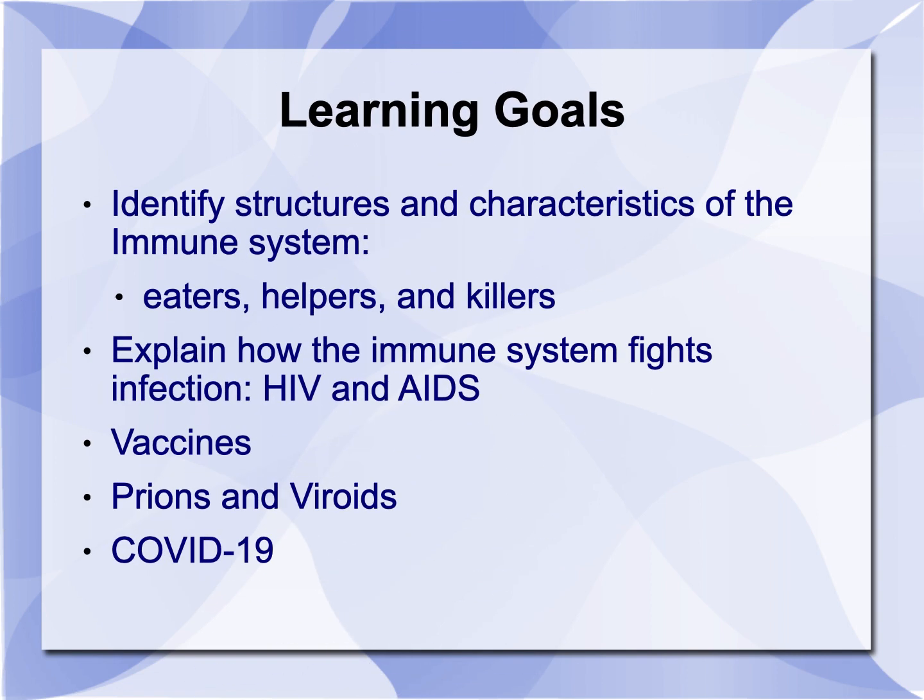Your learning goals: identify the structures and the characteristics of the immune system, in particular the three big types of cells — eaters, helpers, and killers.